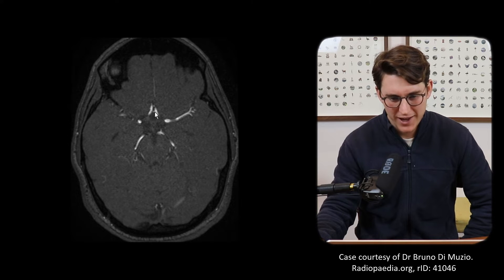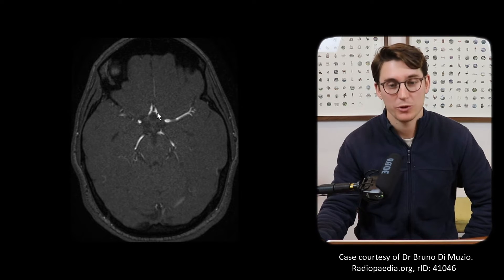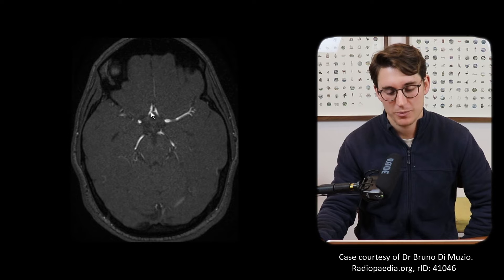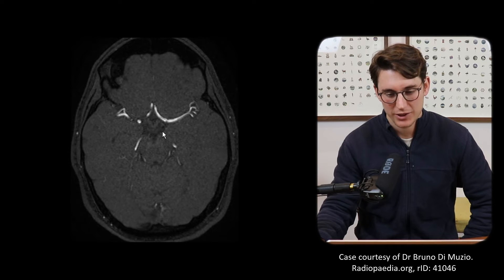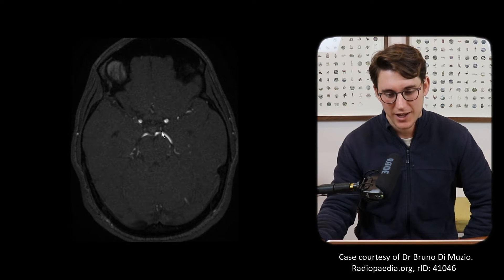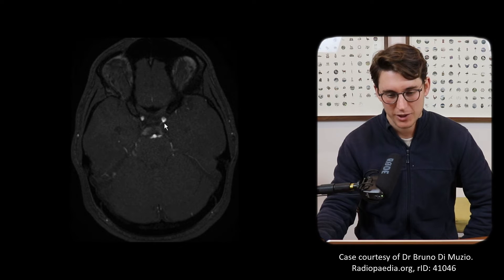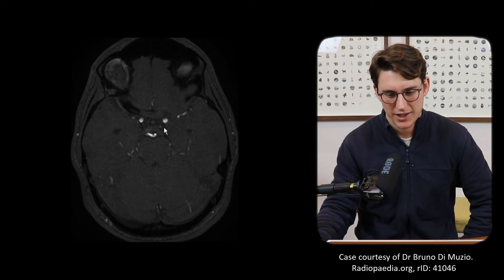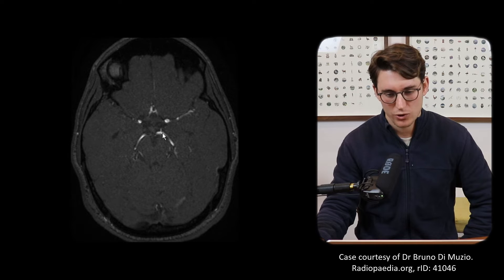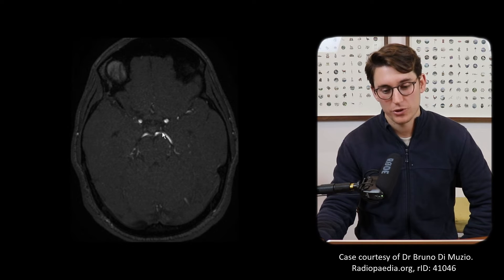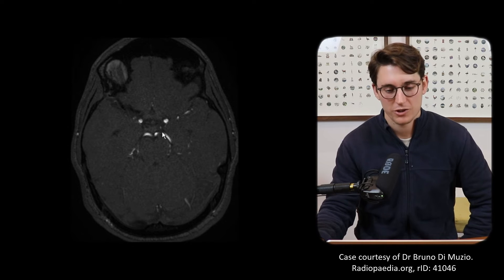Now let's look for our anterior communicating artery between the two anterior cerebral arteries, and if we look closely we can see the posterior communicating artery coming off the carotid heading back and joining our posterior cerebral arteries.